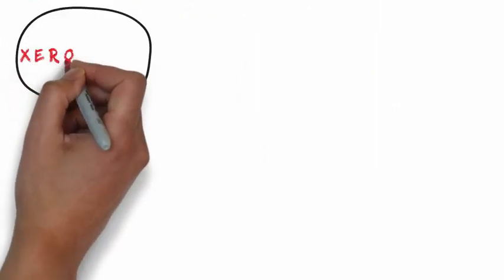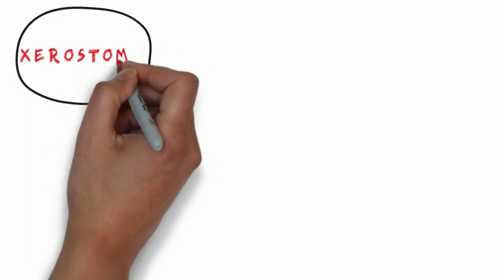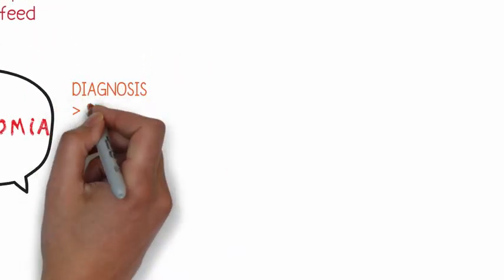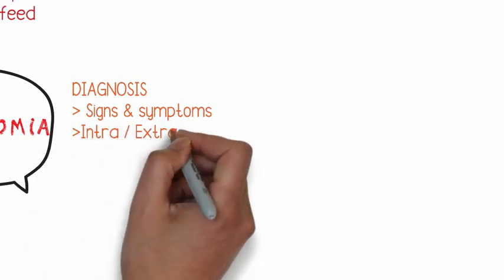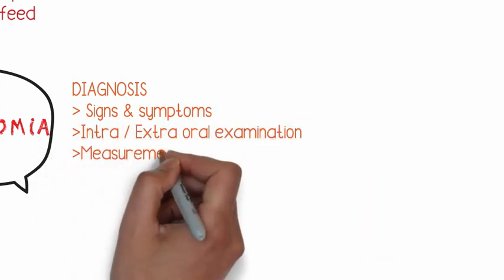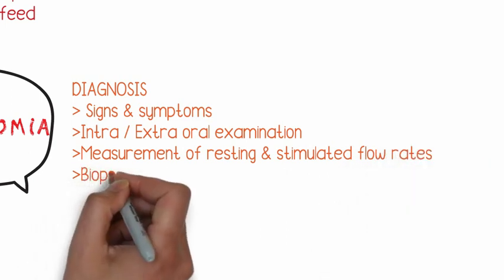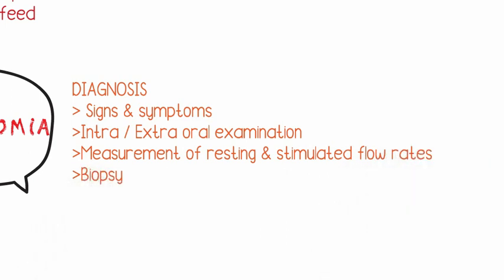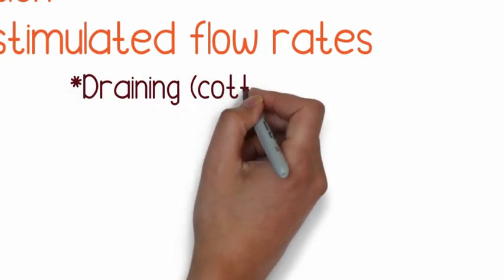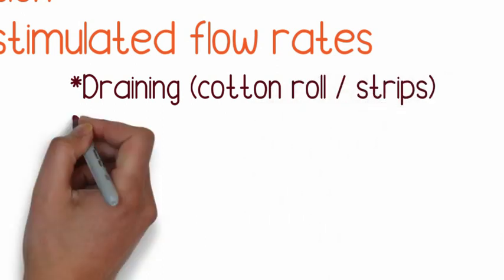The next oral complication is xerostomia, also called dryness of the mouth. This can be diagnosed by thorough history taking, intra- and extra-oral examination, measurement of salivary flow, and in some cases may require biopsy. Salivary flow rates can be measured with one of three methods, and saliva is collected after an overnight fast and two hours after a meal.